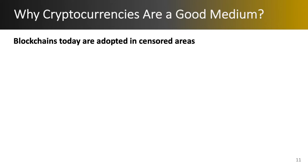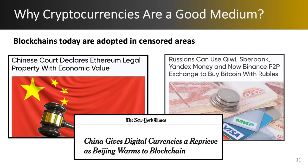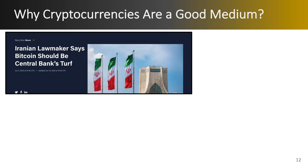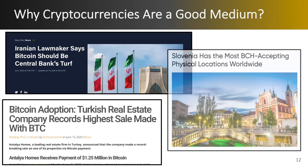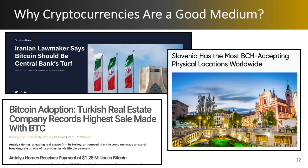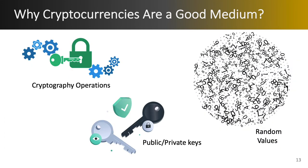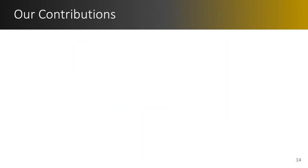So why are cryptocurrencies a good medium for transferring bootstrapping information? Over the past few years we have seen the adoption of blockchains and cryptocurrencies in many censored regions. Here are just a few news headlines that show the presence of cryptocurrencies in such countries. Furthermore, cryptocurrencies utilize many cryptographic operations with many random variables and public keys that we can leverage to encode ciphertext and keys. Now let me tell you in more detail what the contributions of this paper are.